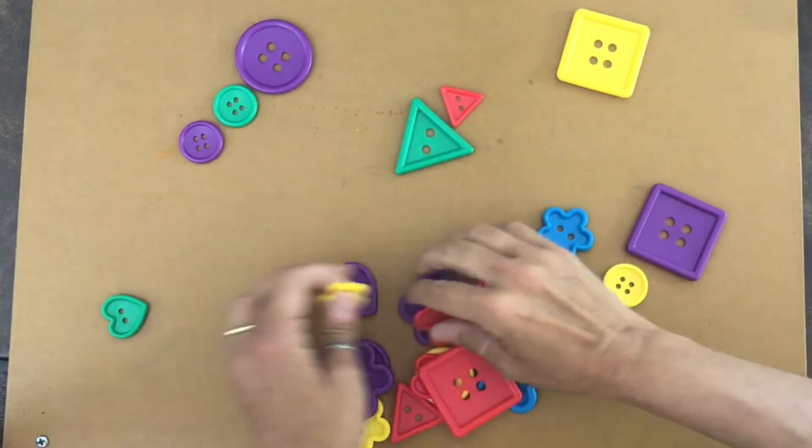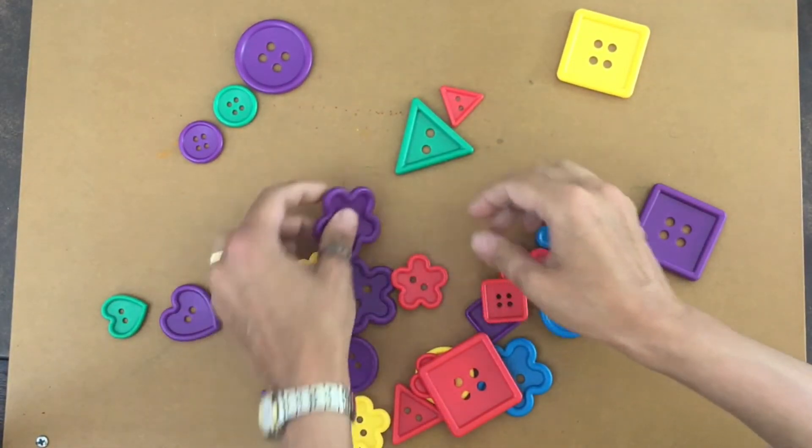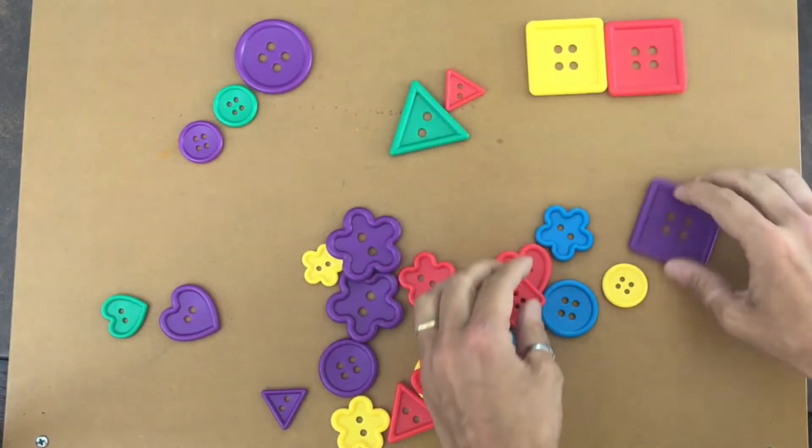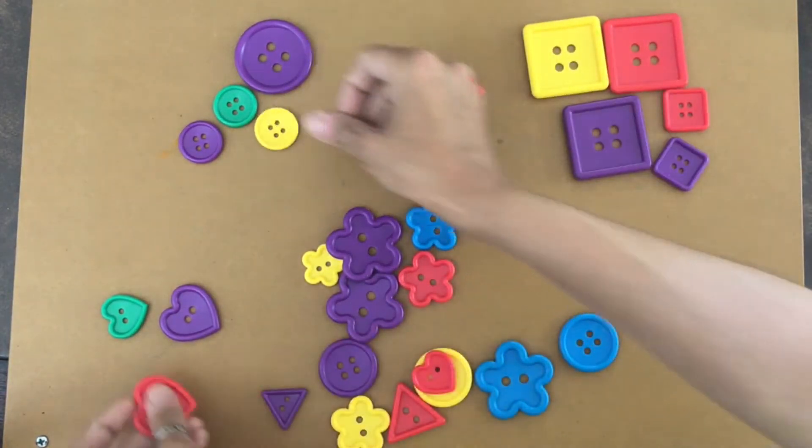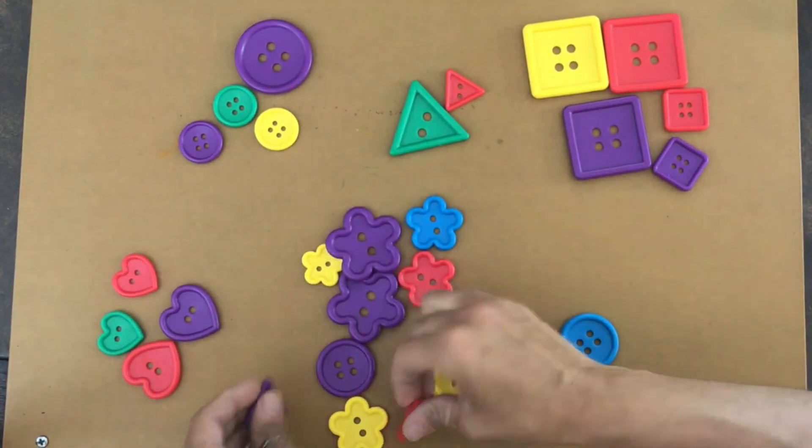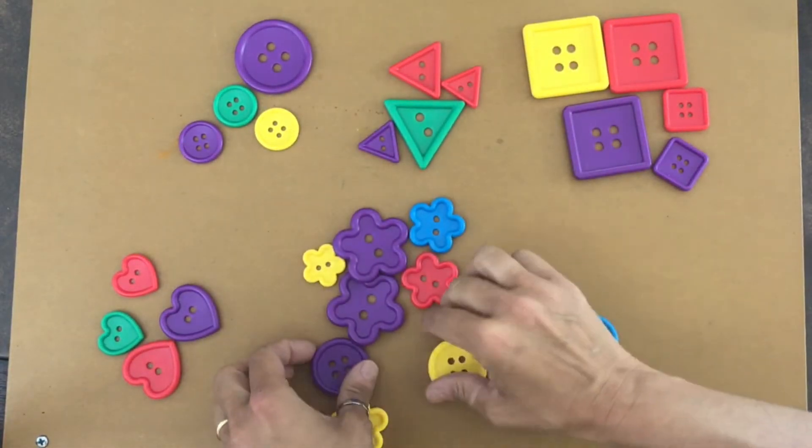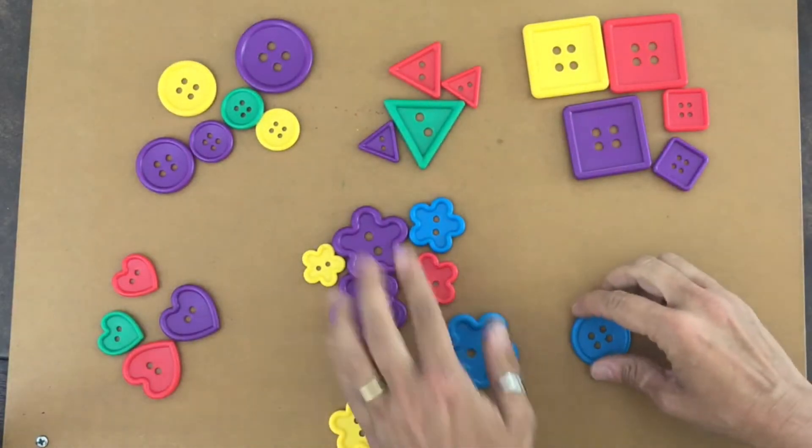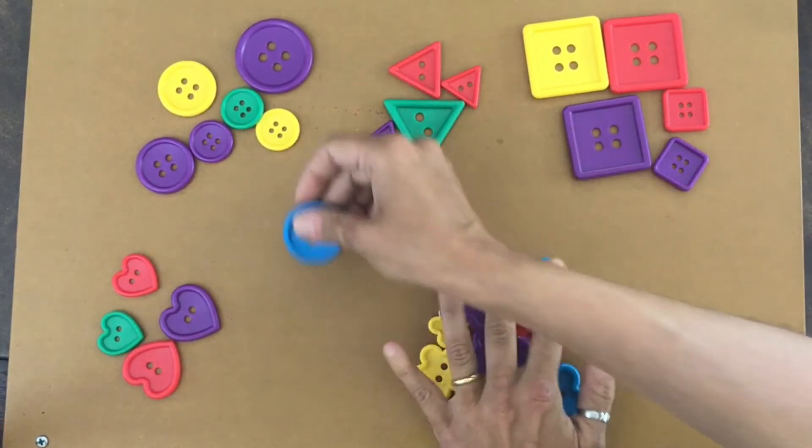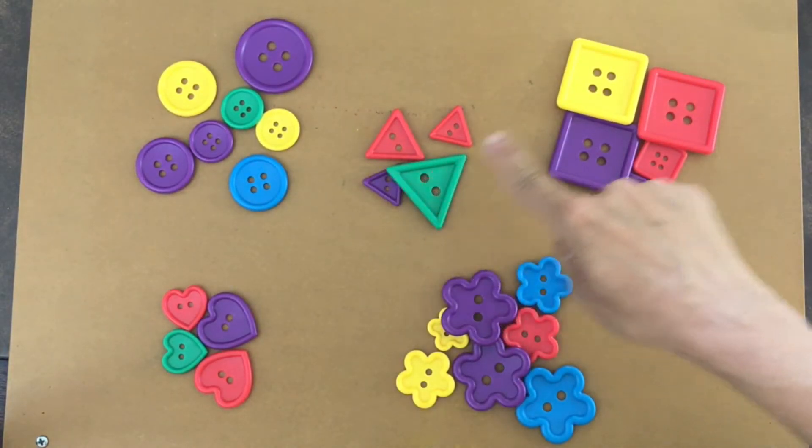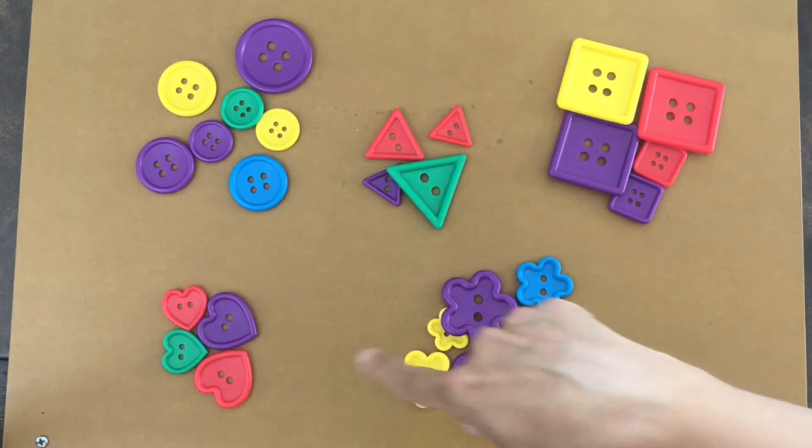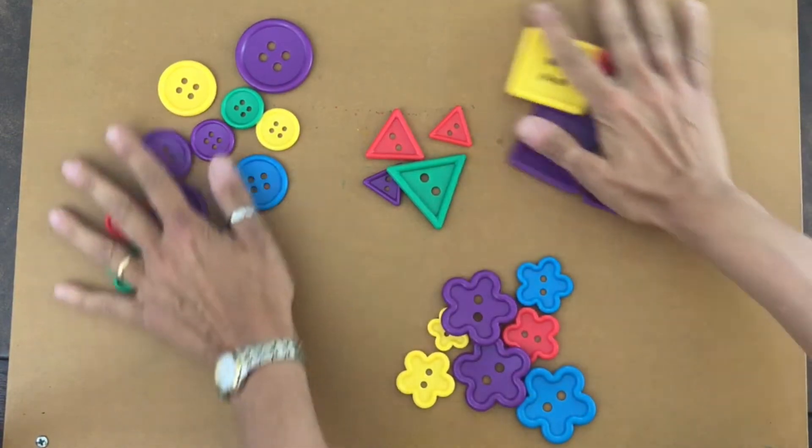The hearts and the flowers. Sort them by shape. All right, so we've got the circles, the triangles, the squares, the flowers, and the hearts. All right, let's mix them up.